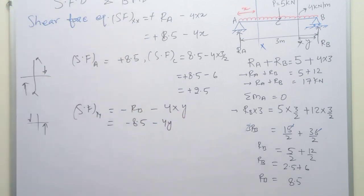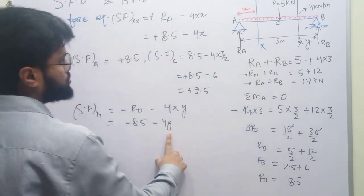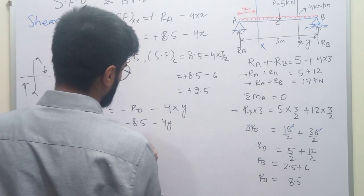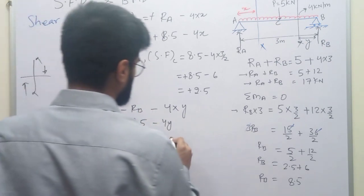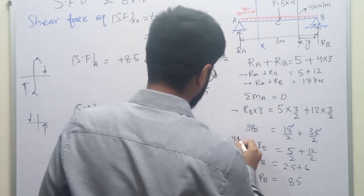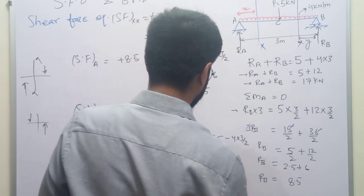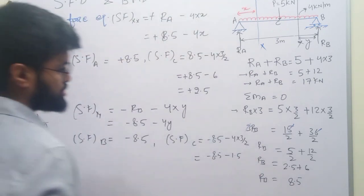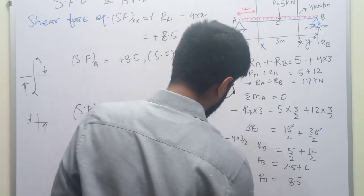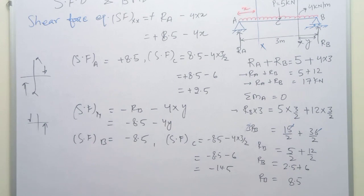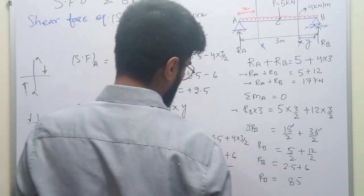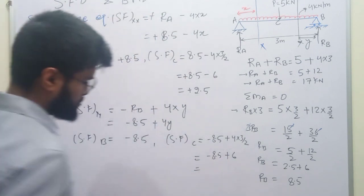SF at section YY = -8.5 + 4y। अगर y = 0 रखें (section at B), तो share force at B = -8.5। अगर C के लिए y = 3/2 = 1.5 रखें: SF = -8.5 + 4 into 1.5 = -8.5 + 6 = -2.5। तो C पे right side से share force = -2.5।